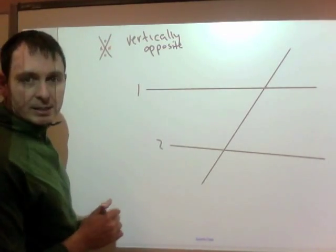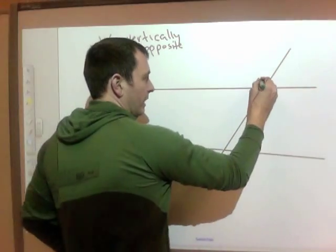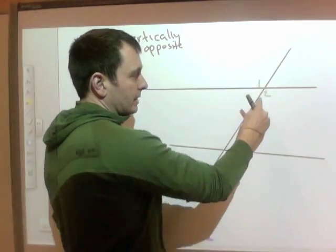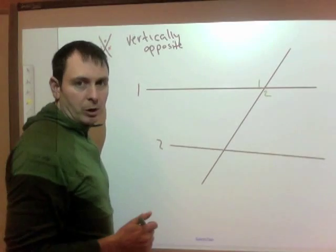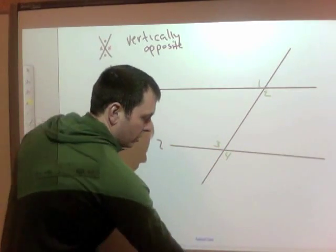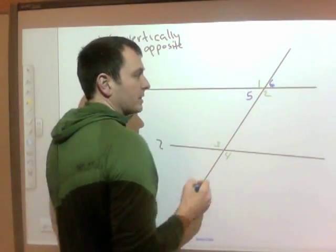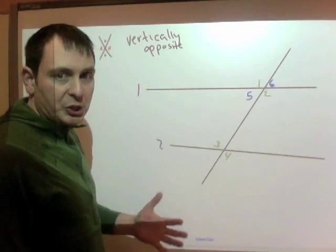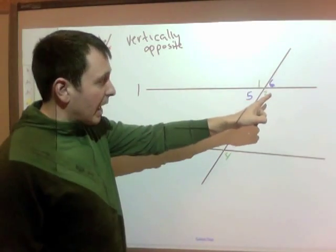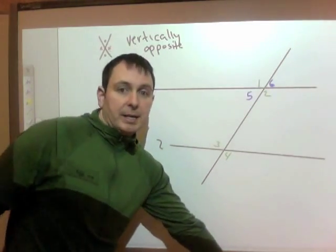The two black dots are vertically opposite; the two red X's are vertically opposite. So angle one and angle two are vertically opposite — the lines make an X, and the two angles across from each other are vertically opposite. Down here, angles three and four are vertically opposite. Angles five and six are vertically opposite to each other. So six and two are not vertically opposite, but two makes an X with one, and five makes an X with six.